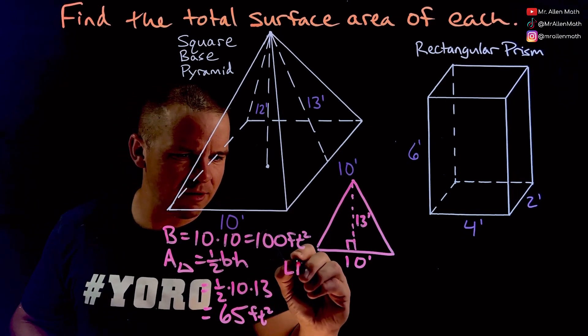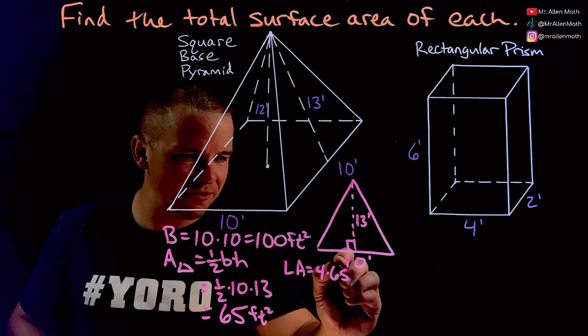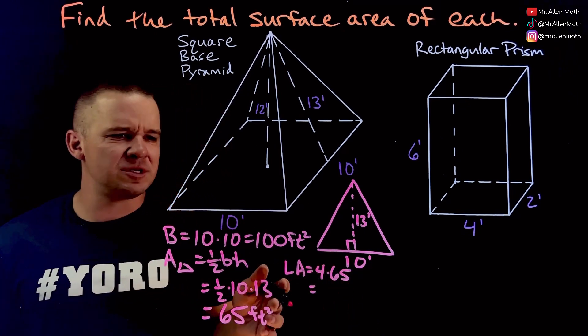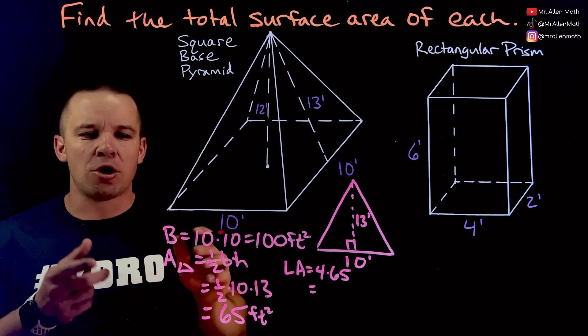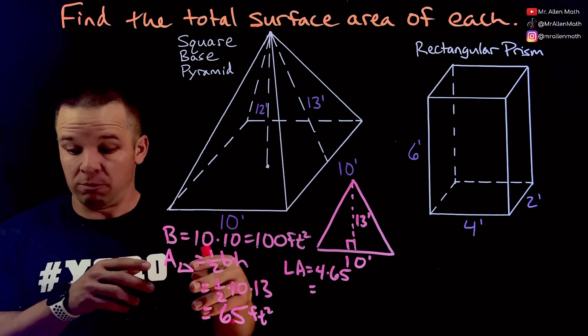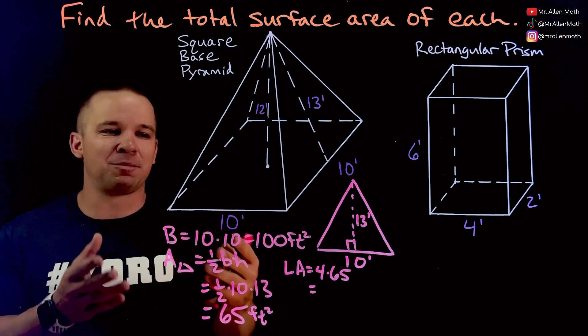So if I multiply that by four, times four, let's see, let's do it right here. Lateral area is going to be four times 65, so it's going to be 260. It's almost easier to think of it as the 130 before we cut it in half and then multiply that to get 260.